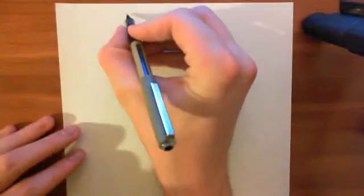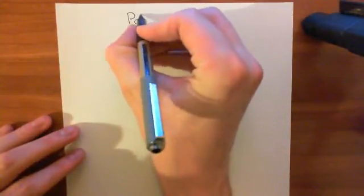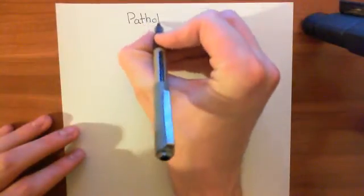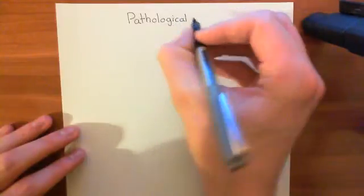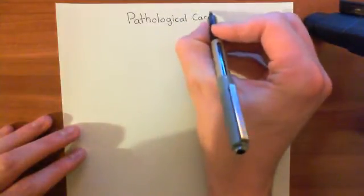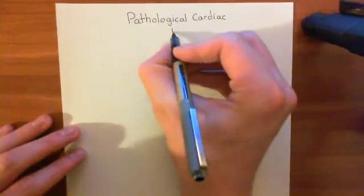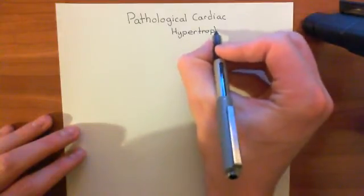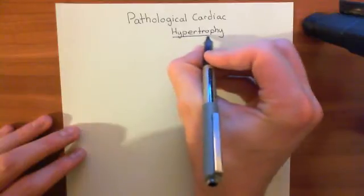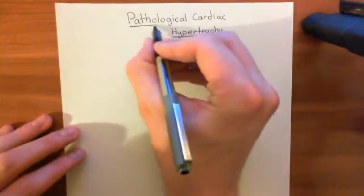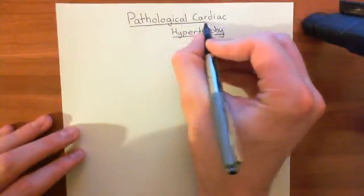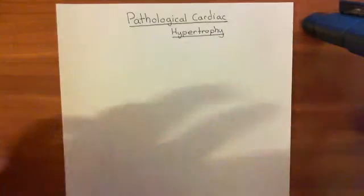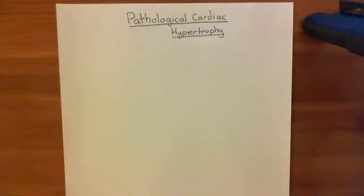Welcome to this next video in the playlist on the heart. In this video, we're going to talk about pathological cardiac hypertrophy. We're going to start off with the story of how pathological cardiac hypertrophy occurs, then talk about what the actual symptoms of it are — what actually happens to the cells, how their contractility, the force which they generate when they contract, goes down, and how their response to beta-1 agonists also goes down.